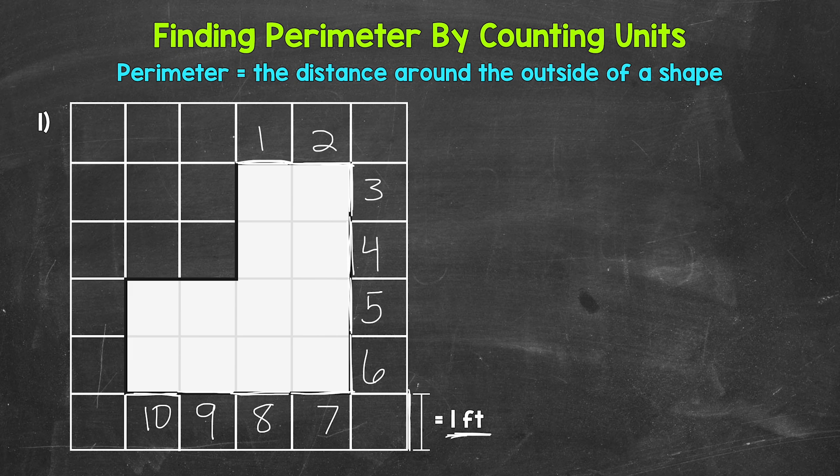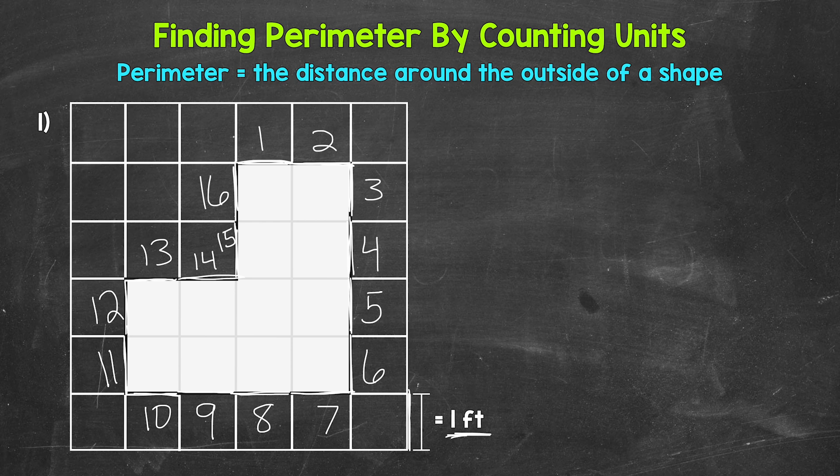Ten feet. Now let's go up this side here. So this is 11 feet, 12 feet, 13 feet, 14 feet, 15 feet, 16 feet. And we are back to the start. So we went all the way around the outside of that composite figure. So that's the perimeter.